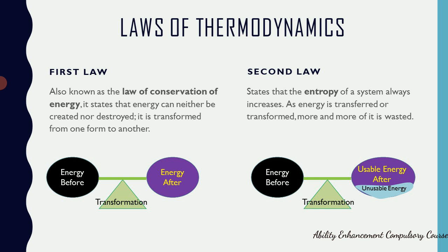Entropy only increases; it can remain the same only when the state of the system does not change, but it never decreases. This means that whenever there is an energy transformation, not all the energy can be converted into work — some of it remains unusable. As shown in the diagram, we have energy getting transformed into energy of equal quantity, but only a chunk of that is usable energy; a small part is unavailable to do work. That is exactly what the second law states.